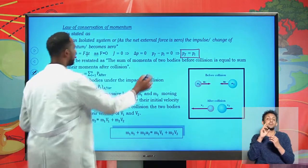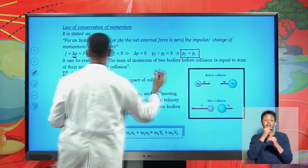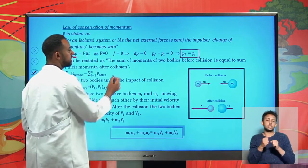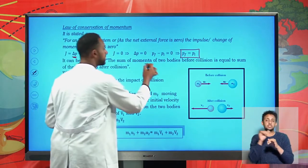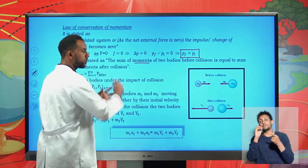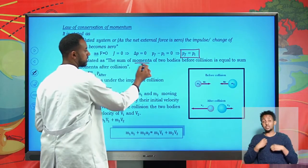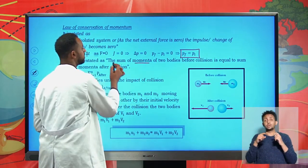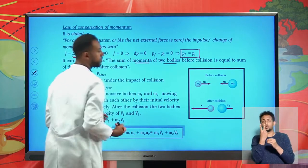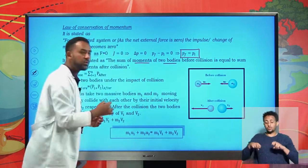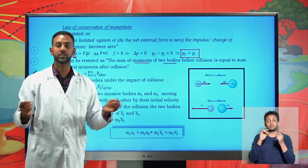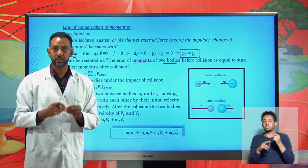The final and initial momentum are conserved. It can be restated that the sum of momenta of different objects — the sum of momentum of two bodies before collision is equal to the sum of momenta after collision.